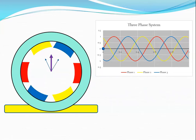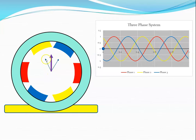If I take a point in time — here — in the red phase, there is no current flowing through the windings, so there's no magnetic flux. But there is current flowing through the windings in the yellow phase and the blue phase, and they'll cause a magnetic field that has a direction represented by these two vectors. The summation of those two vectors is this resultant in purple.